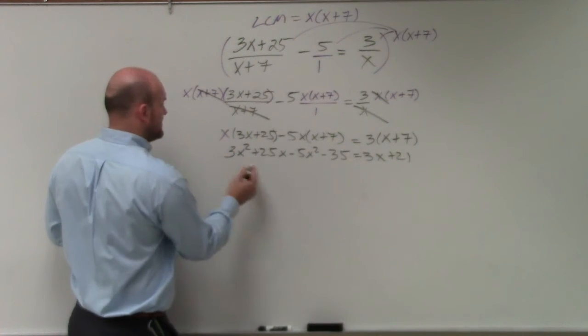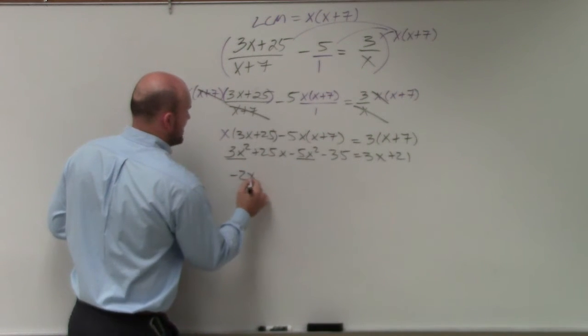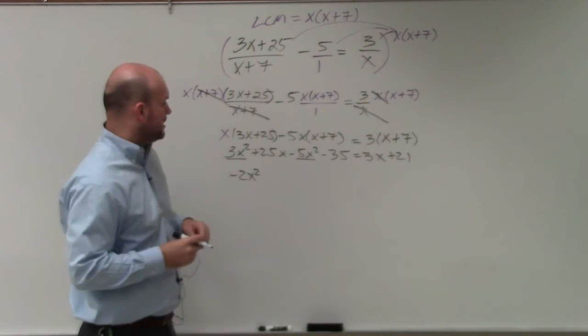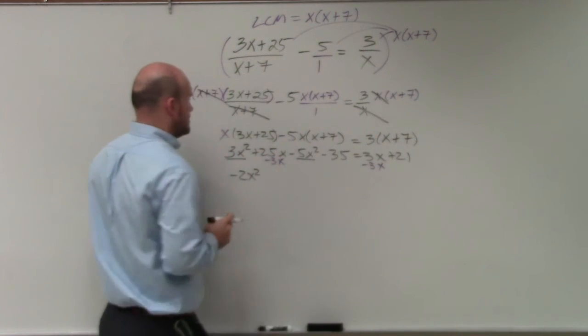3x squared minus 5x squared is going to be a negative 2x squared. I'm going to want to subtract a 3x on both sides.